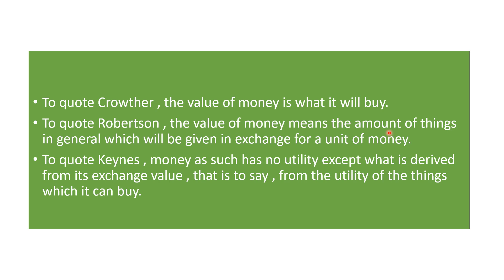According to Robertson, this is the value of money. To quote Keynes, money as such has no utility except what is derived from its exchange value. So if you have a mass accumulation of wealth at your home, it is not going to give you any utility. That utility arises when you exchange that wealth for something else — then arises the value of money. That is the utility of things which money can buy. This is the real value of money.